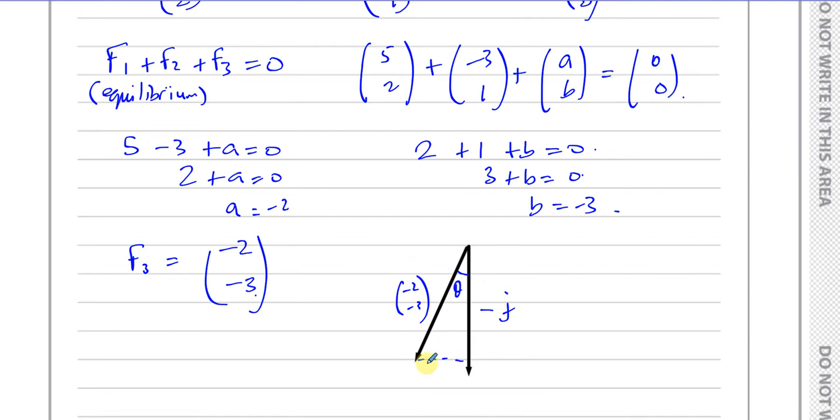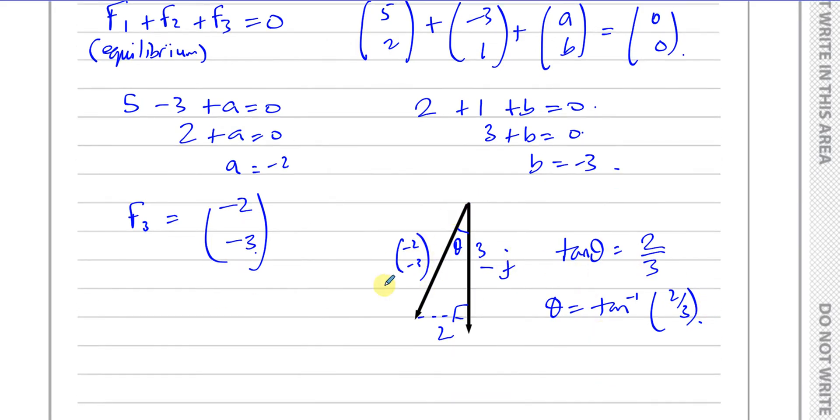So you can work out the angle it makes with negative j is this angle theta. So it's negative 2, that's magnitude 2. Negative 3, that's magnitude 3. So it's like a right angle triangle. We can say the tangent of the angle theta is opposite over adjacent, which is 2 over 3. So theta is equal to inverse tan of 2 thirds.